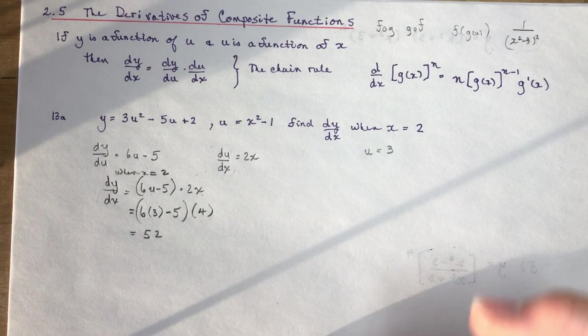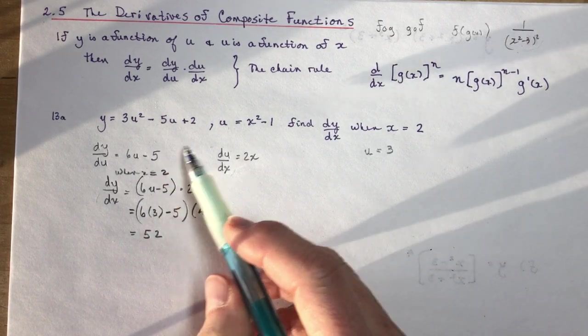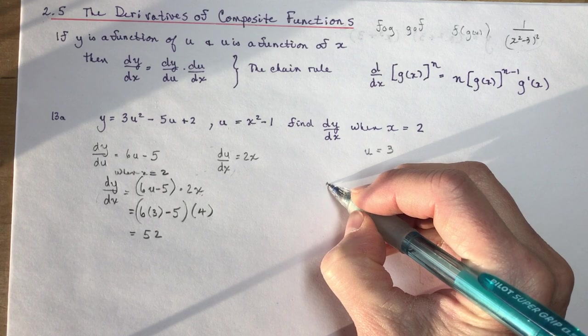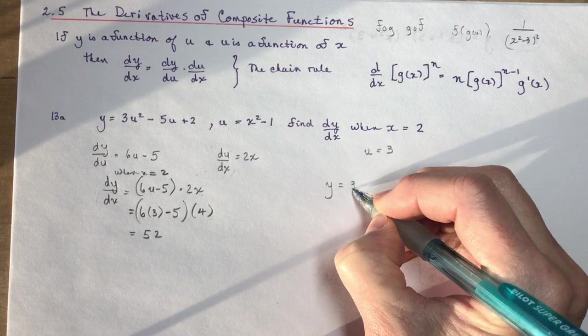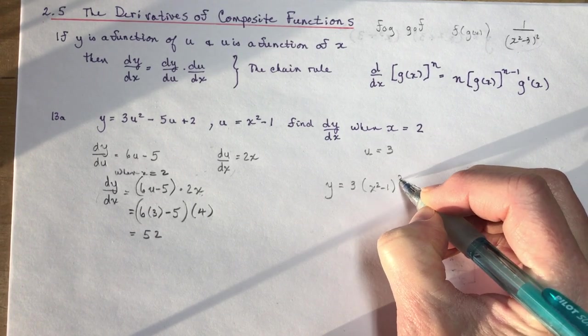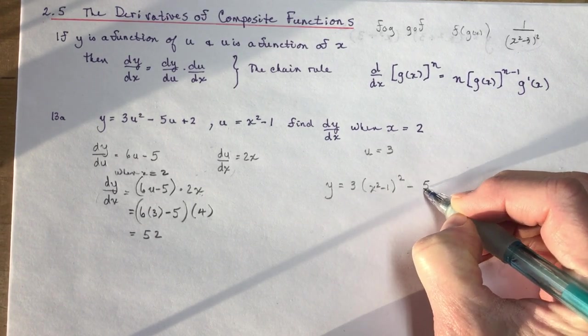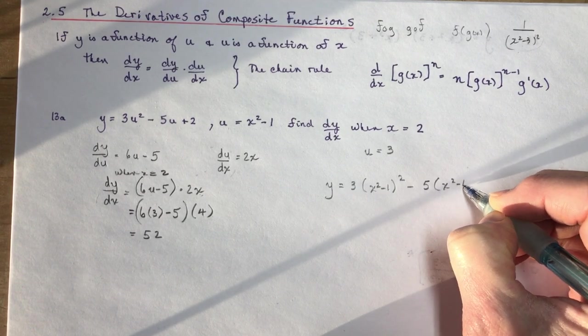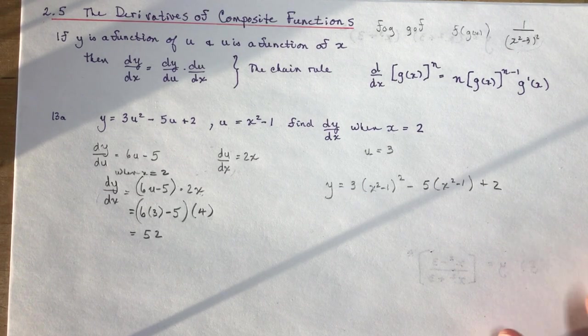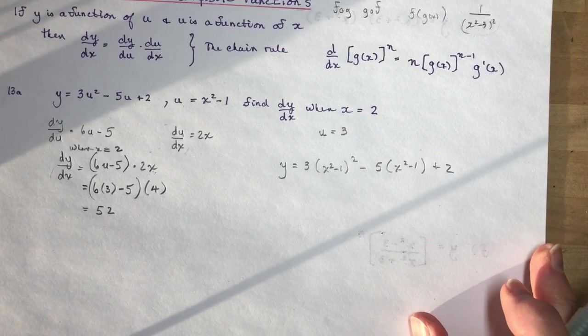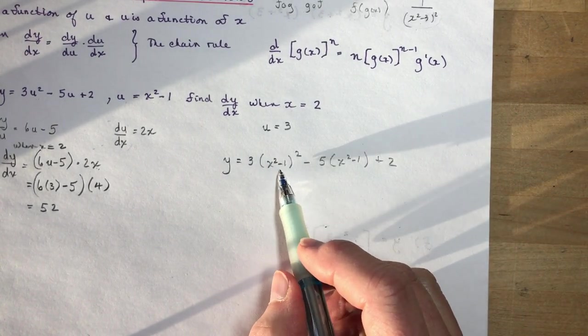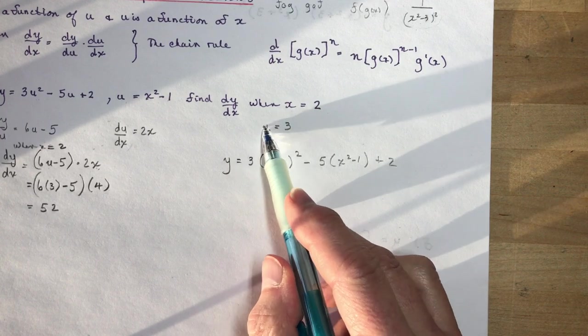Now, like I said, you could do this by substituting in x² - 1 in for u, like we've done before. So I could write this as y equals 3(x² - 1)² - 5(x² - 1) + 2. Now if I took the derivative, I could take the derivative entirely with respect to x because I have substituted my u with x² - 1. So I wouldn't need to do this evaluation.